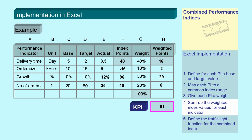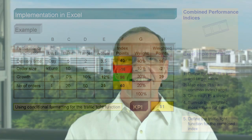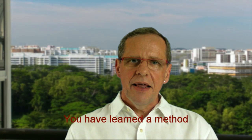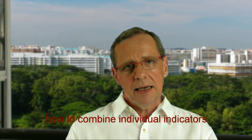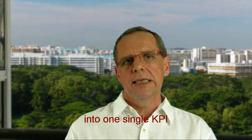Summing up, we get the combined index as the KPI. Traffic lights are realized using conditional formatting. Of course, we also could use traffic lights for the individual index components. Now you have learned a method how to combine a set of performance indicators into one single key performance indicator.